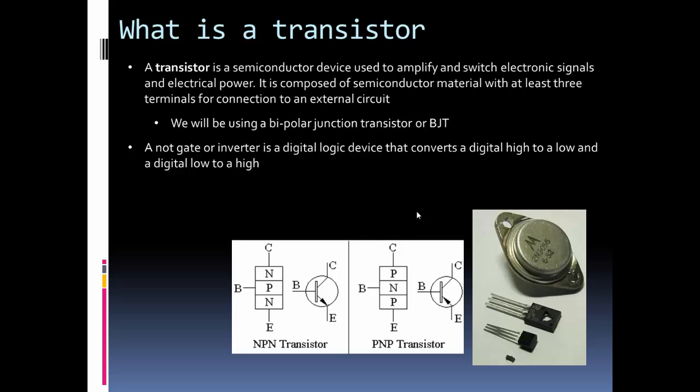Another example would be if a chip has an enable input to turn it on or off. If you have two different chips and their enable inputs are different, high and low, you may want to invert it. So those are some examples of why you would want to invert or have a NOT gate for a digital logic level.